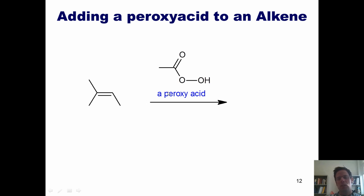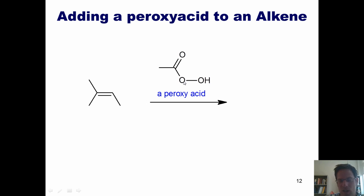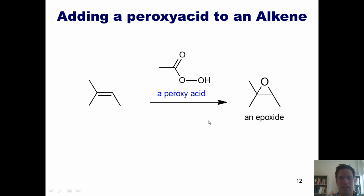You need to distinguish between this type of molecule and a carboxylic acid. A carboxylic acid has an OH right at this position, whereas a peroxy acid has two oxygens — an oxygen here bonded to an OH. It is slightly different but distinctive. If you treat an alkene under these conditions with a peroxy acid, it will turn the alkene into a three-membered ring that contains an oxygen, and this type of product is called an epoxide.